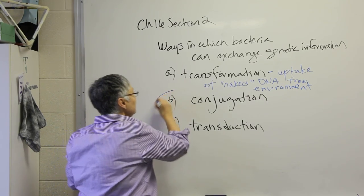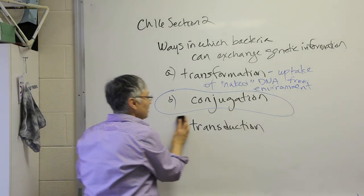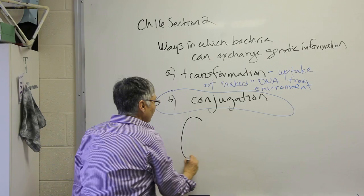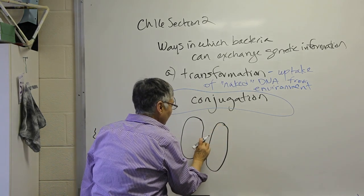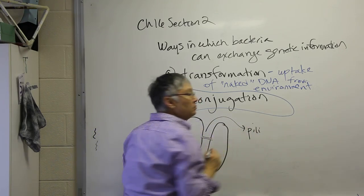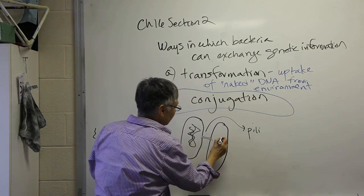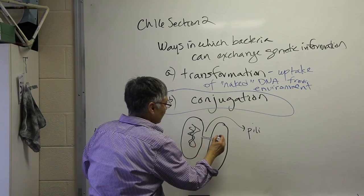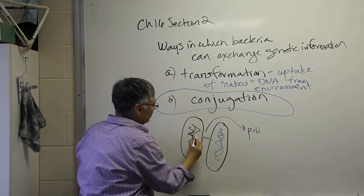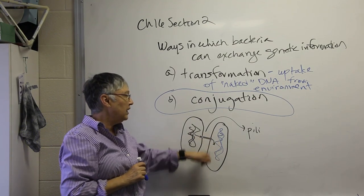A second type of way that bacteria can exchange genetic information is called conjugation. And this is actually a mechanism we haven't talked about before. And in this method, bacteria actually form bridges between each other. And the structure that's used is a special type of pili. And what will happen is that we've got two cells. One cell is always going to be the donor, and as it replicates its DNA, that DNA can be transferred across that bridge to be taken up by the second cell. So that's called conjugation.